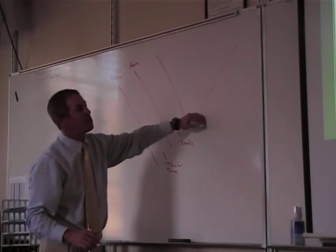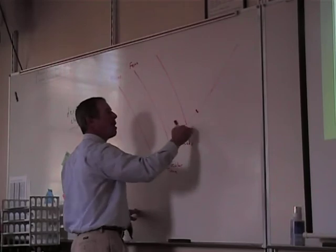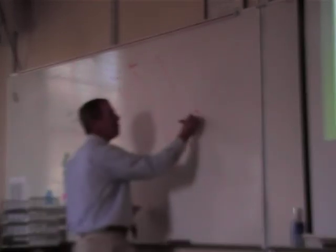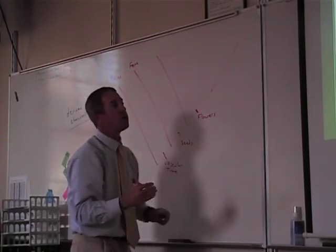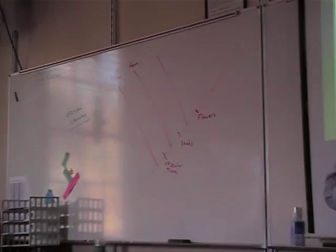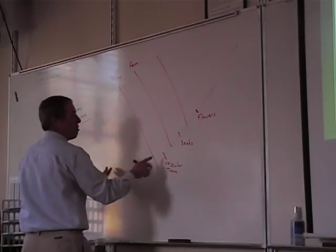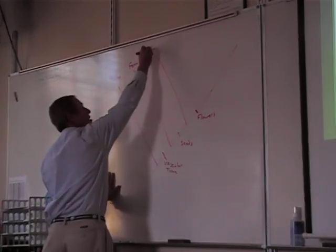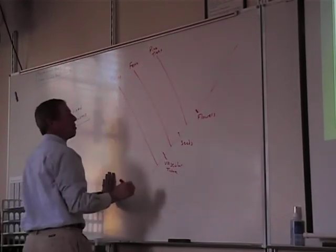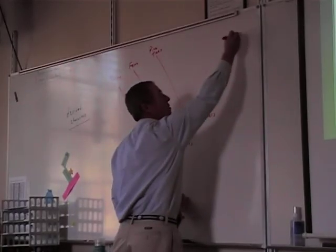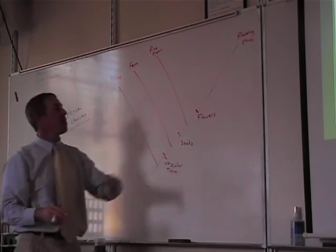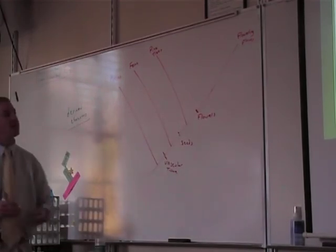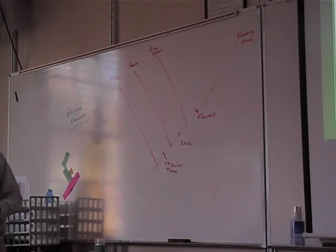What comes after seeds? Flowers. Pine trees have vascular tissue and seeds but not flowers, so pine trees branch off next. The last organism is flowering plants — they have flowers, seeds, and vascular tissue; they have them all.